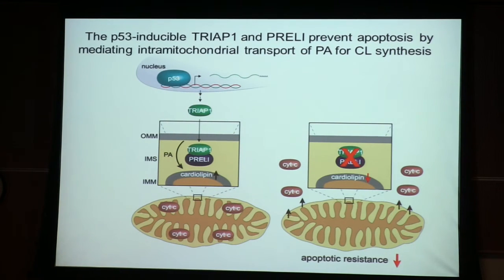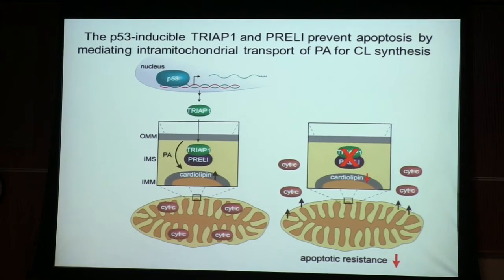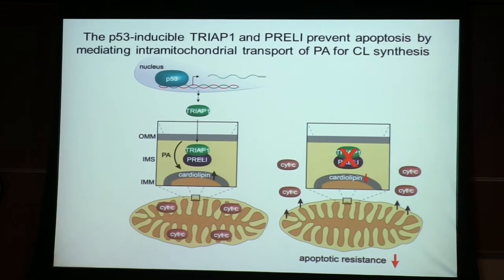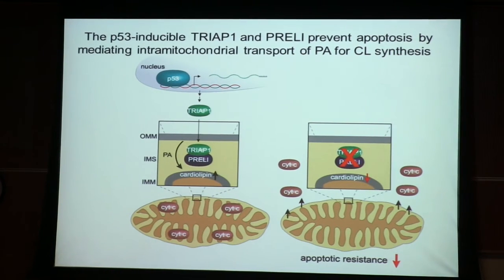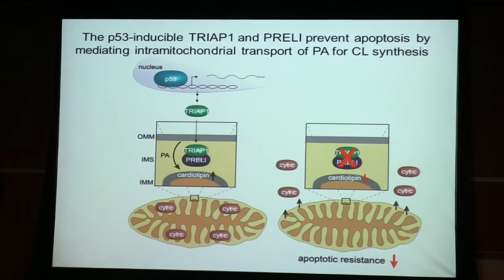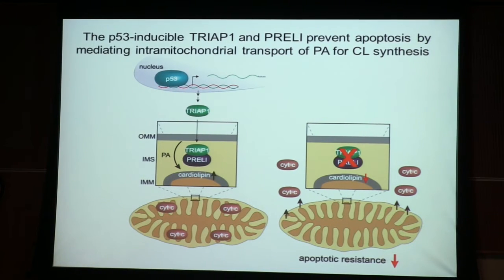In mammalian cells, one of these proteins, TRIOP-1, is p53-inducible. We think this is an important response to preserve cardiolipin concentration in the mitochondrial inner membrane, because one function of cardiolipin is to be an acceptor for cytochrome C. It is therefore very important for a cell to keep cardiolipin concentration high to prevent the release of cytochrome C from the inner membrane and ultimately from mitochondria during apoptotic signaling. When we take away these lipid transfer proteins in knockouts, cells are much more susceptible to apoptosis, and we can rescue this by simply providing more of the phospholipid to these cells.